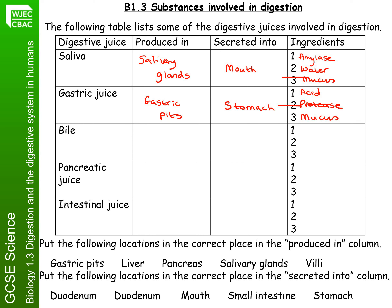The third digestive juice is bile, which is produced in the liver. It's released into the first part of the small intestine, which is called the duodenum. The bile is there to neutralise the acid coming from the stomach, so it contains an alkali substance, but it would also contain bile salts and pigments.